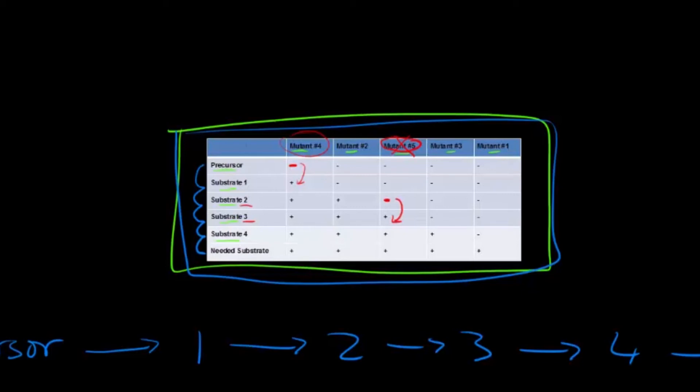But the precursor molecule has changed in these different steps to the needed substrate for the bacteria to grow. And then these are the different enzymes. So mutant number 4, so enzyme number 4, is necessary for this first step to occur. Then mutant number 2, and mutant number 5, or enzyme number 5, enzyme number 3, and enzyme number 1.